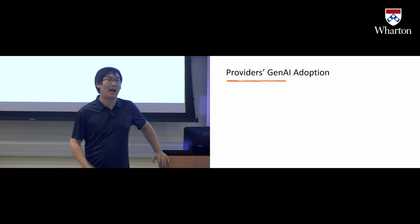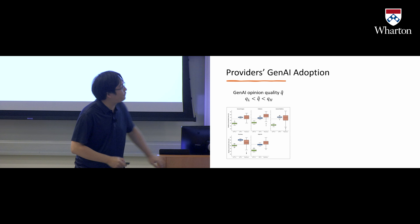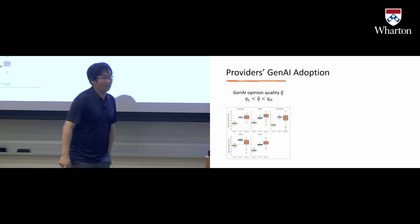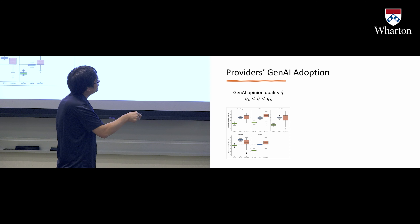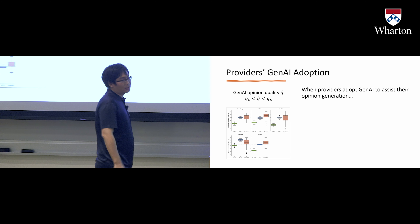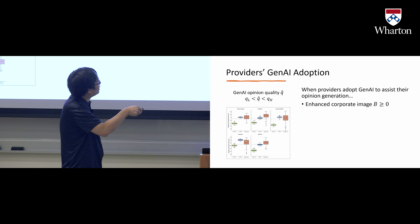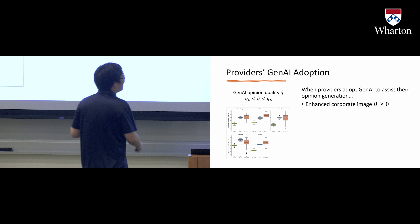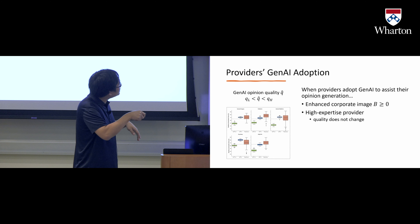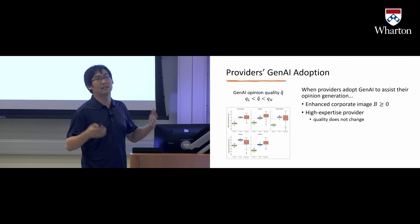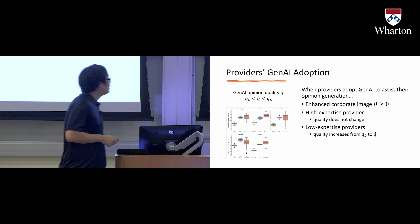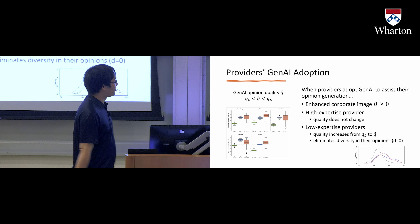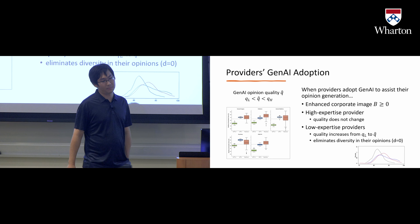Now we want to say something about providers' generative AI adoption and how it affects outcomes. Based on earlier results, we have seen that the generative AI result is somewhat in between the best-performing and the poor-quality providers. So we assume that the quality of the generative AI opinion is in between Q_L and Q_H. We also model the homogenization effect. There's also an image enhancement effect when you use AI — if you say you're an AI company, people may think you're among the top. For the high-expertise provider, their quality does not change when they use generative AI. But for low-expertise providers, quality can increase from Q_L to Q_H. However, homogenization eliminates the diversity in their opinions, which means D becomes zero.